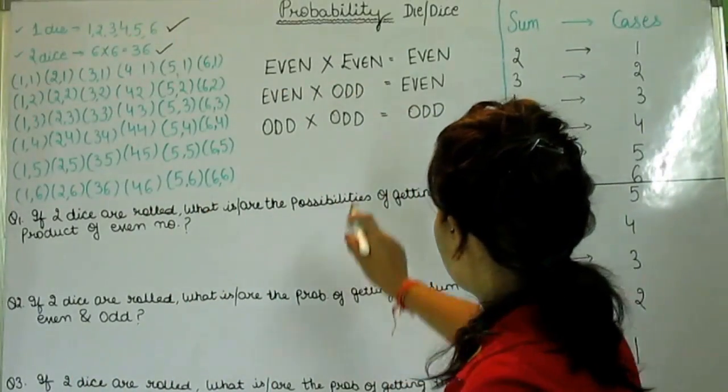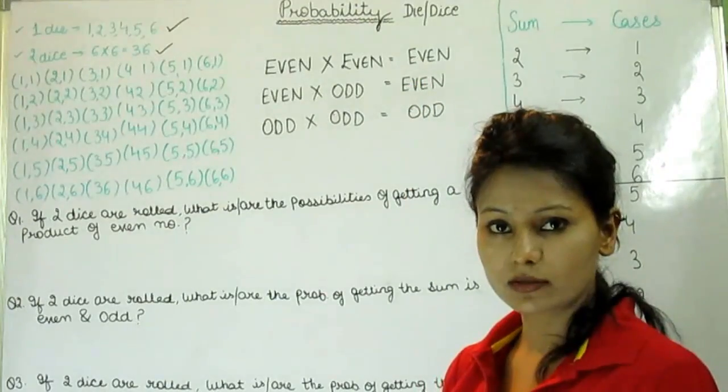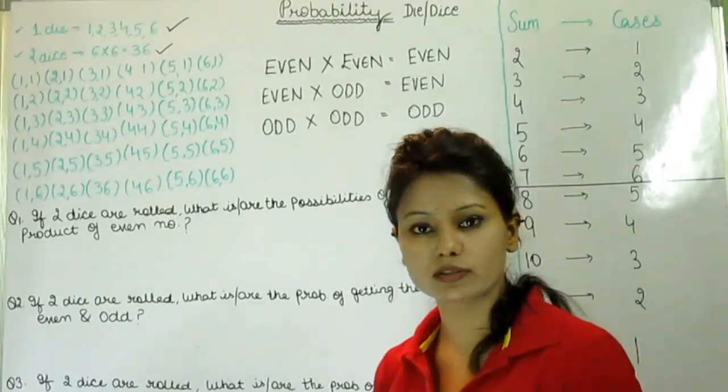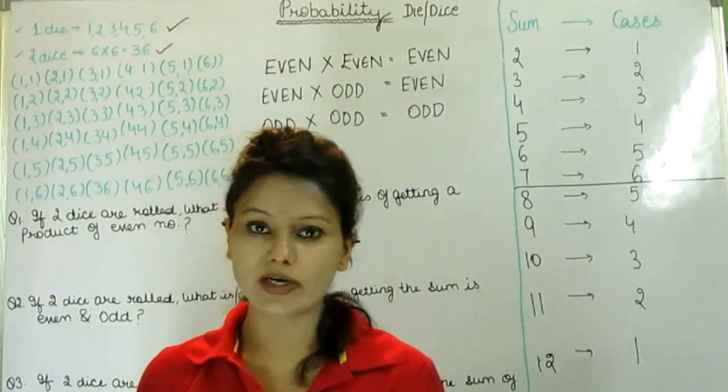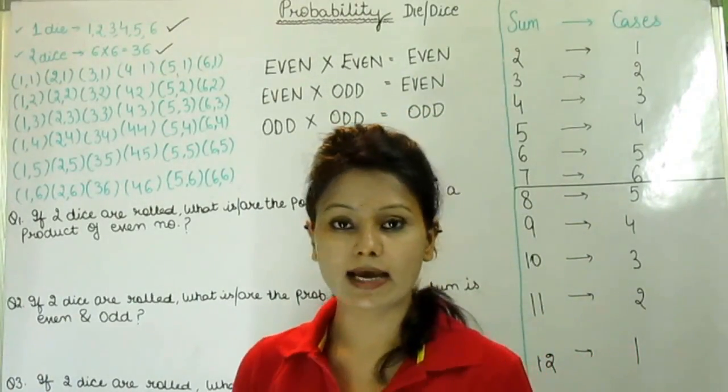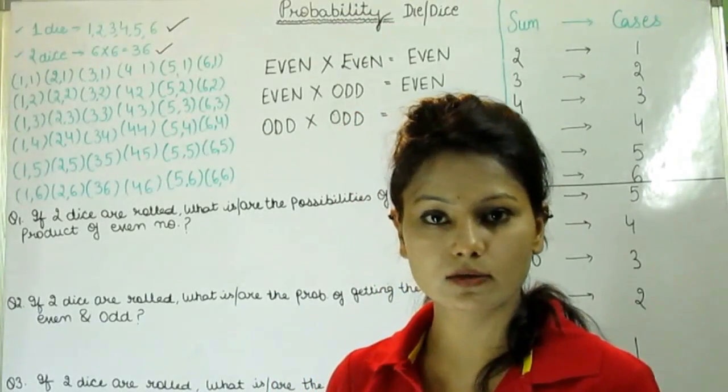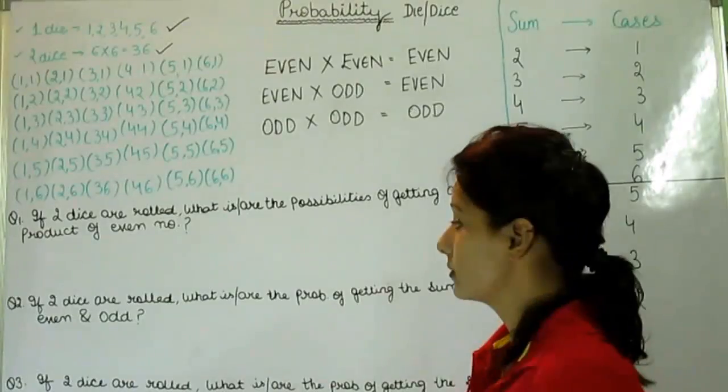So here I am reading: if we multiply two even numbers, the product of two even numbers is even. If the product of one even and another number is odd, the product of even and odd is even. And the product of odd, two odd numbers, the answer would be an odd number.